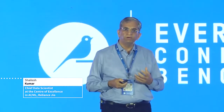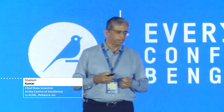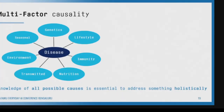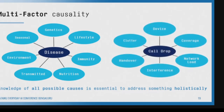Now we'll talk about different notions of causality. The first notion is what we call multi-factor causality. If you think about medical diagnosis, a disease can have many, many causes. It could be caused by nutrition deficiency, genetic disorder, communicable diseases, seasonal factors — and this is a horizontal structure.